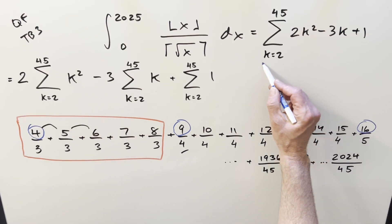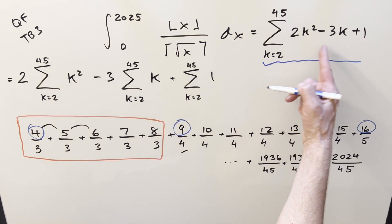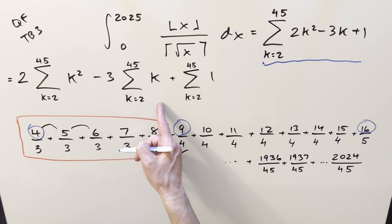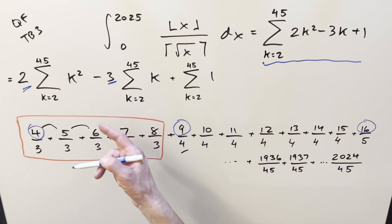Okay, so bringing this sum over from the previous board, what I did actually was I just split it up. So, because we're adding and subtracting, break it up into three sums and just factor the constants out front just to make it easier to calculate. And one thing I wanted to get back to, I didn't really explain why we have 45 as the upper bound.